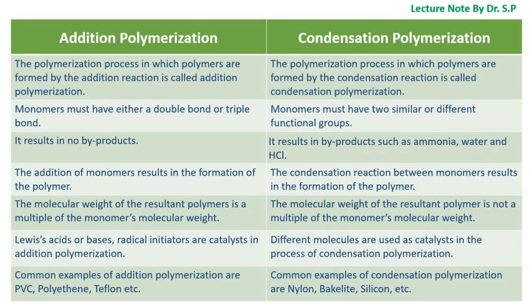Monomers must have either a double bond or triple bond in addition polymerization. Monomers must have two similar or different functional groups in condensation polymerization.